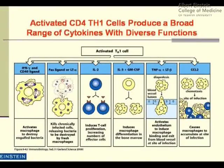CD4 T cells make a broad range of cytokines with broad activities — predominantly activating macrophages, increasing T cell proliferation, and increasing macrophage differentiation in the bone marrow. GM-CSF is a critical macrophage growth factor that stimulates macrophage differentiation in the bone marrow — if you have an infection and need macrophages to eliminate the agent, you also want to recruit more from the bone marrow. It also stimulates CCL2 secretion; CCL2 is a chemokine that recruits macrophages to the site of infection.